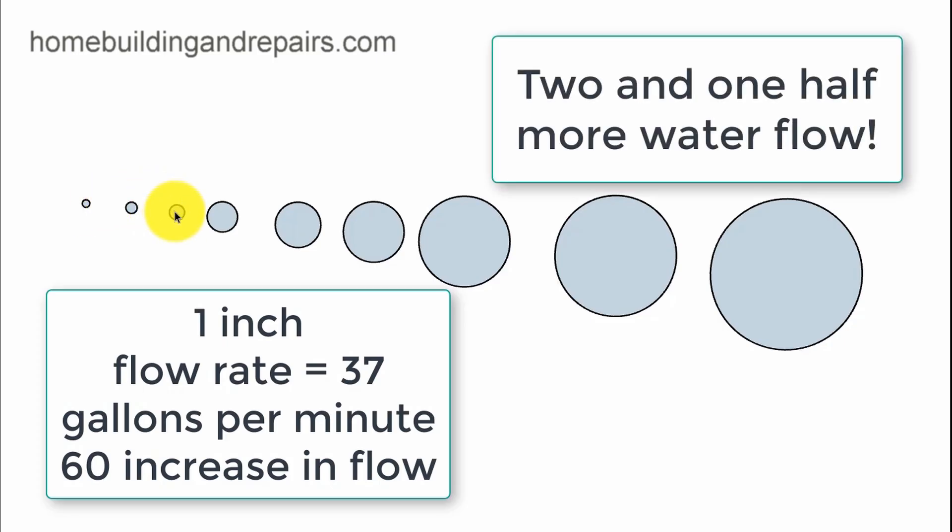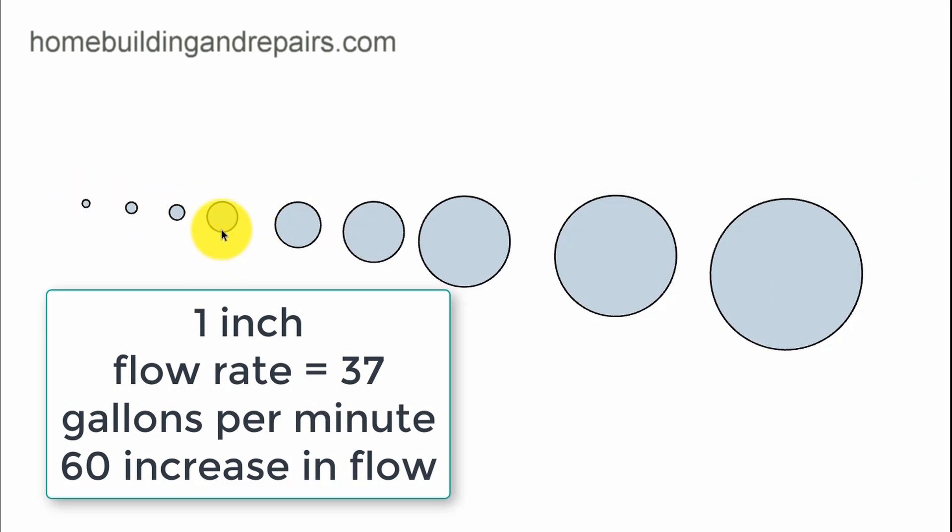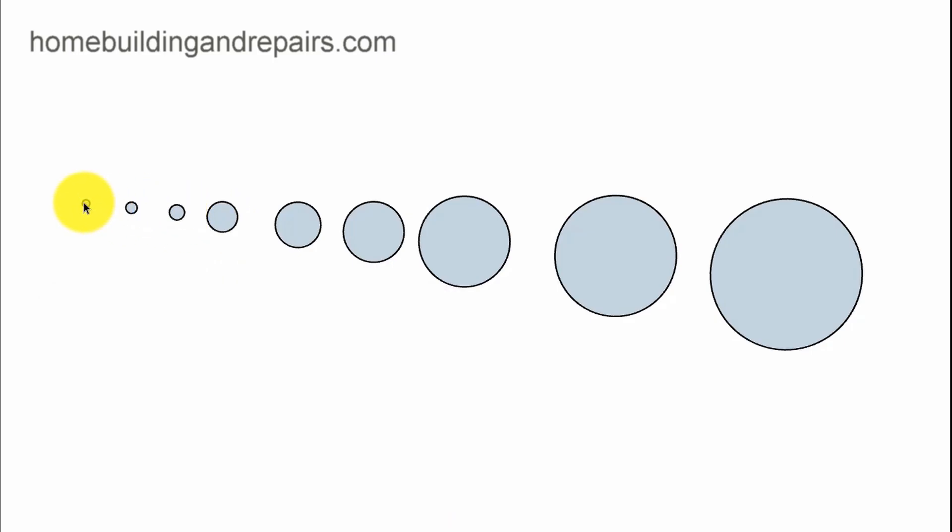Of course, you would think if we're going from an inch to a 1/2-inch, we should have more than double. But once we get into some of these other numbers, it's going to get shocking. The percentage of increase from 1/2-inch to 3/4-inch is 64% more water. The difference between a 1-inch pipe and a 3/4-inch pipe is going to be 60% more water.